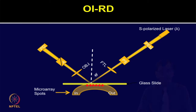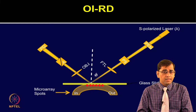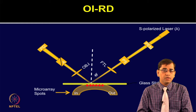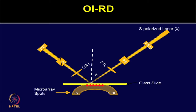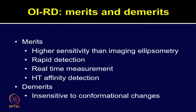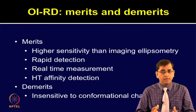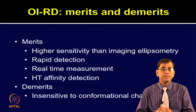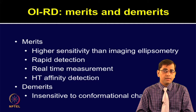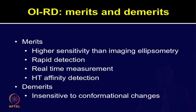In this slide, I have shown you the configuration of OIRD. In this scanning OIRD microscope, the X scan is performed by moving the sample-holding stage, and the Y scan is performed by a combination of a rotating mirror and theta lens. The sample is coated on a glass slide, which is directly in contact with the fluidic system. The OIRD platform is more sensitive than imaging ellipsometry, providing a rapid and high-throughput affinity detection system with real-time measurement and sensitivity to conformational changes.